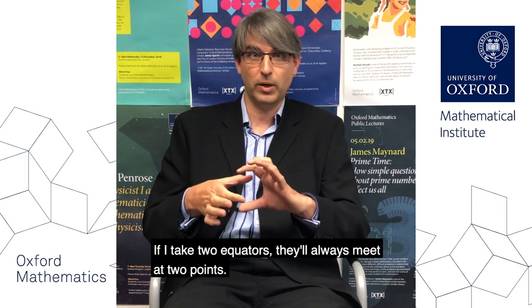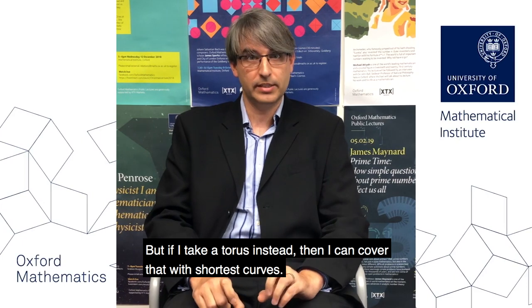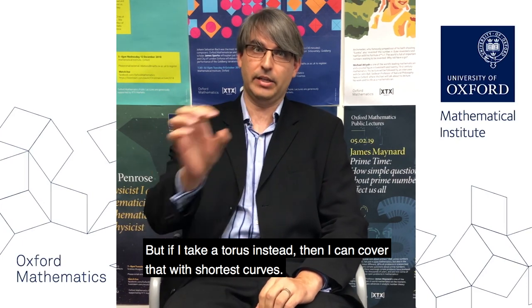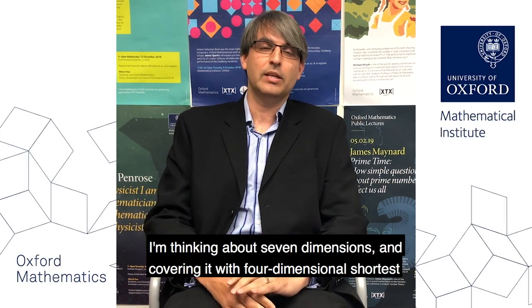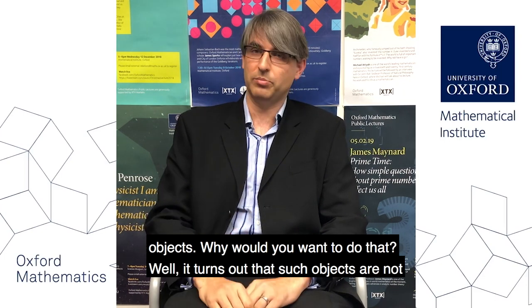If I take two equators, they'll always meet at two points. But if I take a torus instead, then I can cover that with shortest curves. What I want to think about is doing this in higher dimensions — in particular, I'm thinking about seven dimensions and covering it with four-dimensional shortest objects.